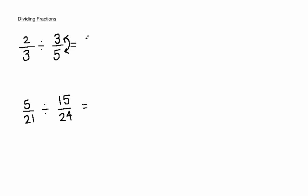The second thing you need to do is change this division sign in the middle into a multiplication sign. So this division question then becomes two thirds multiplied by five over three.